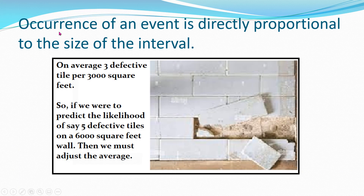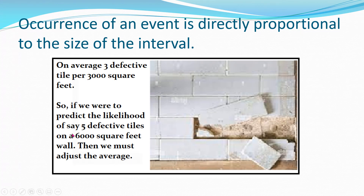The fourth assumption is that the occurrence of an event is directly proportional to the size of the interval. For example, if the contractor is quoting that on average the number of defective tiles is three, he's going to give a quotation for a specific number of square feet. For example, he says that whenever he constructs a 300 square feet wall, historically the average number of defective tiles is equal to three. So if we were to predict the likelihood of, say, five defective tiles on a 600 square feet wall, we must adjust our average.